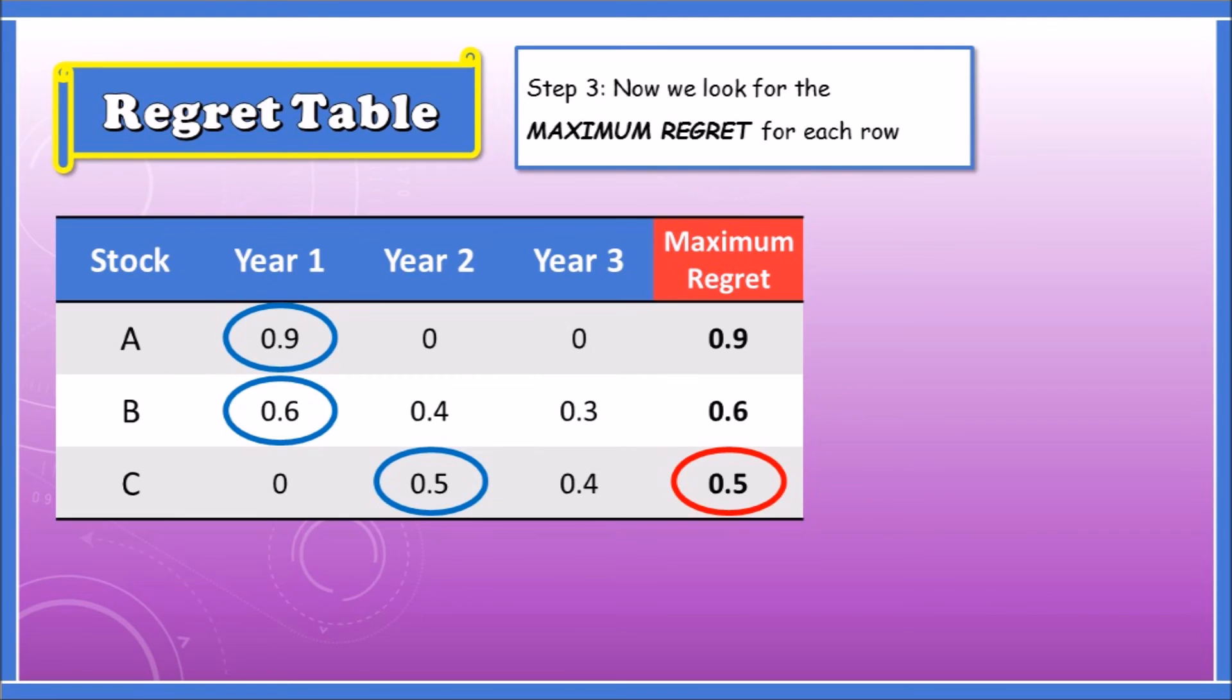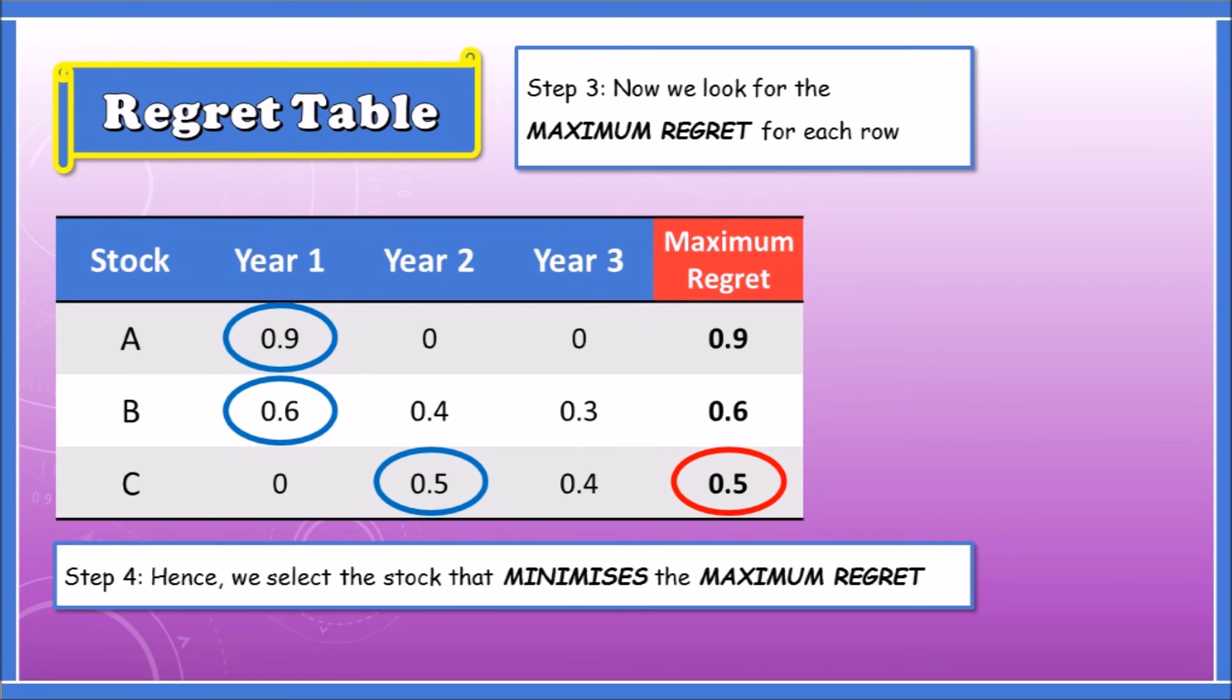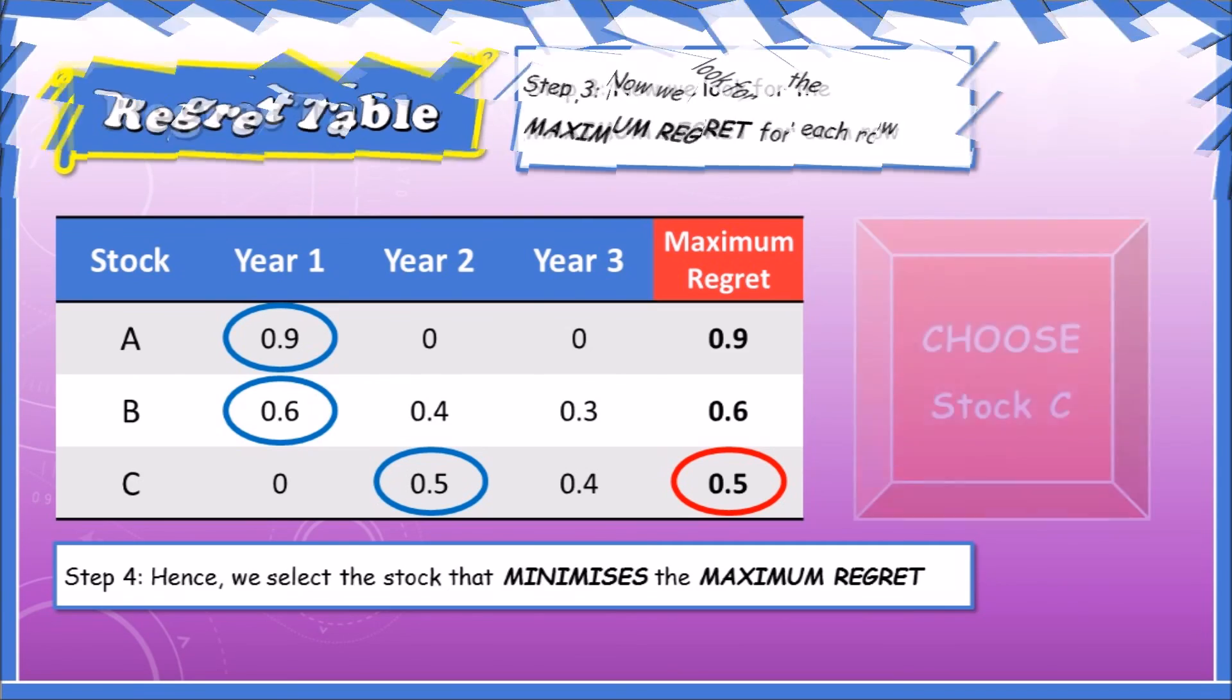Now filling our table with maximum regret, we have 0.9, 0.6, 0.5. Hence according to Step 4, we should select the stock that minimizes the maximum regret, and that would be 0.5. So that means we should choose stock C.